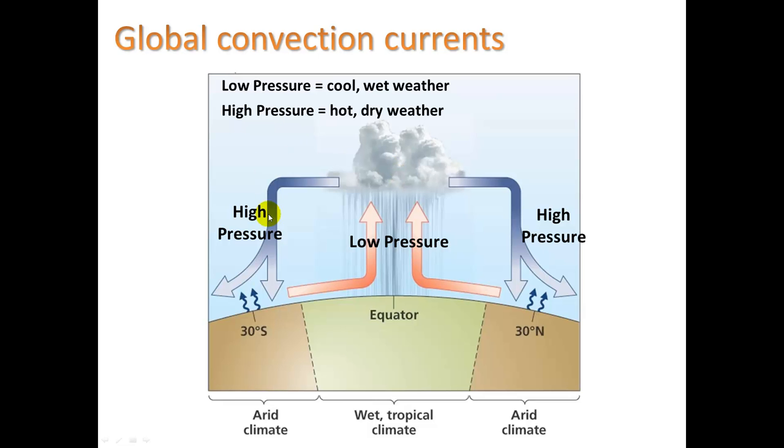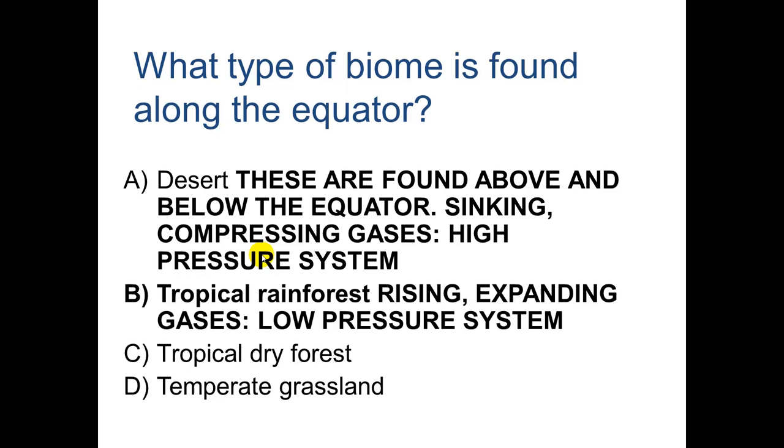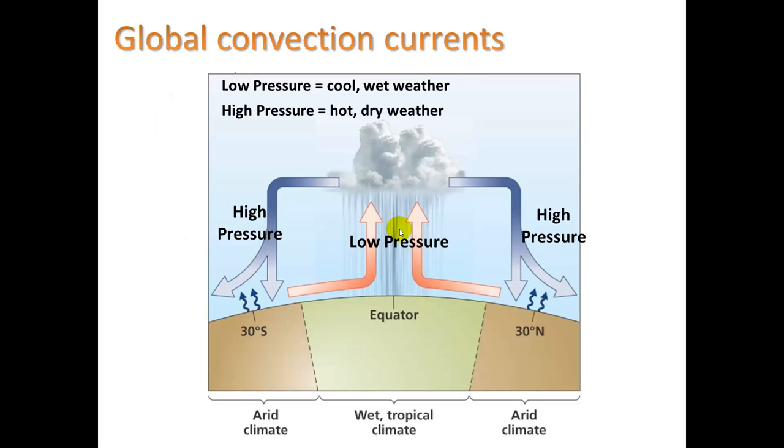The opposite is for high pressure. It's hot, dry weather. So my next question, what type of biome is found along the equator? It is the rainforest. So because the air is rising, expanding gases, low pressure system. Deserts, if we go back to this question here, the last slide, deserts are found next to the equator. As the air comes down, it's becoming pressurized and it is therefore heating up. And it's dry because it already lost its moisture.